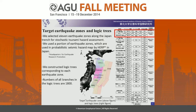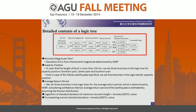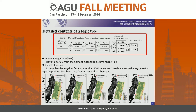Let's take a look at the detailed contents of one logic tree. This logic tree is for the off-Sanriku earthquake. In the logic tree, we constructed five kinds of uncertainties: moment magnitude, aspect position, earthquake return period, log-normal standard deviation for tsunami wave height, and its truncated value. For the moment magnitude, we considered a deviation of 0.1 from the moment magnitude determined by HERP. For the aspect position, when the fault length is more than 150 km, we set three branches in the logic tree: northern part, center part, and southern part of the fault.